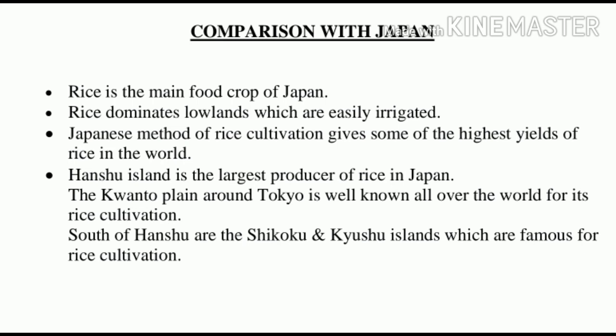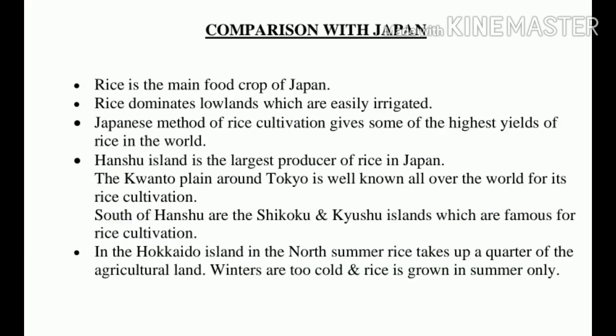South of Honshu are the Shikoku and Kyushu islands which are famous for rice cultivation. In Hokkaido Island in the north, summer rice takes up a quarter of the agricultural land. Winters are too cold for rice in Hokkaido and rice is grown in summer only. Now let us talk about wheat.